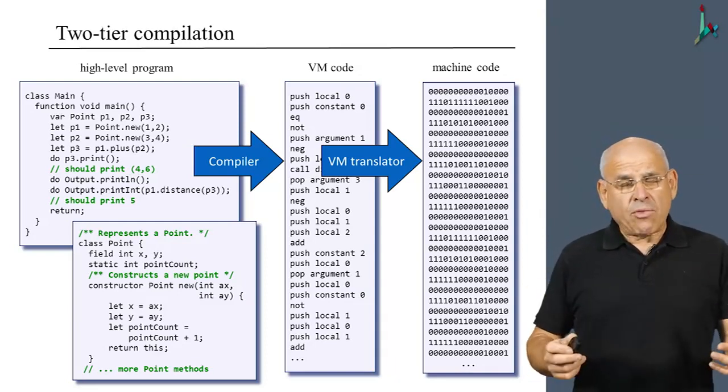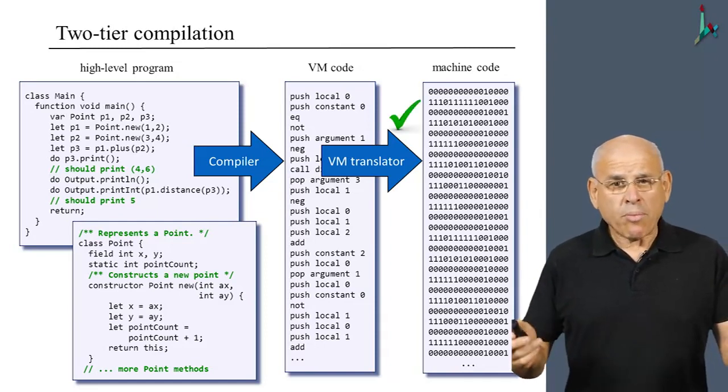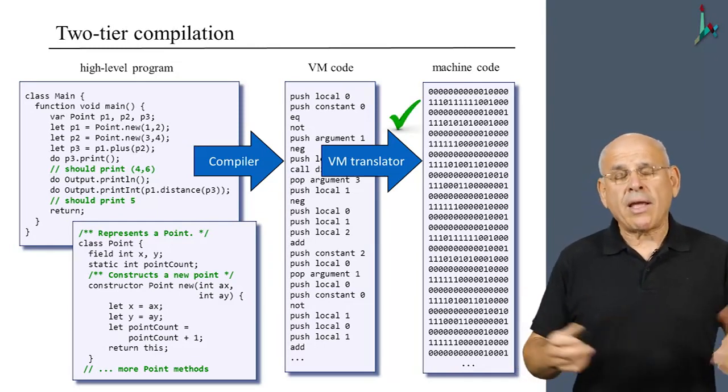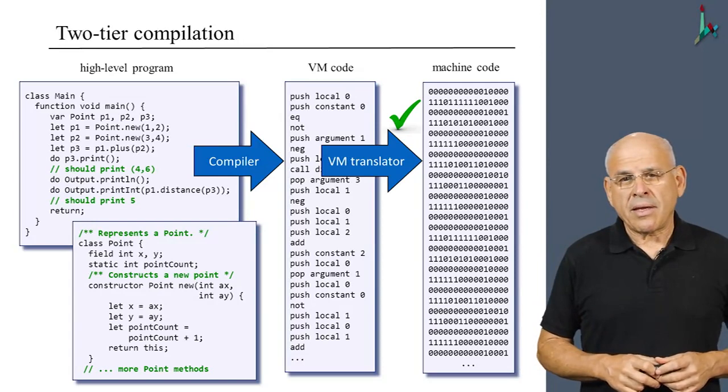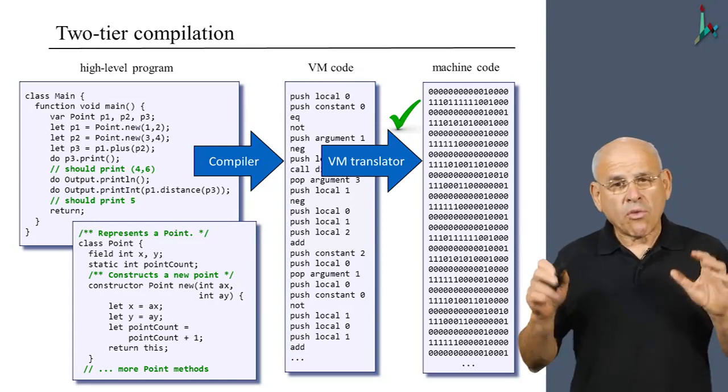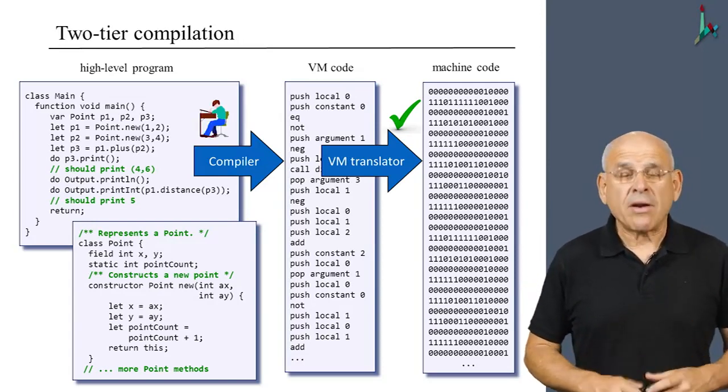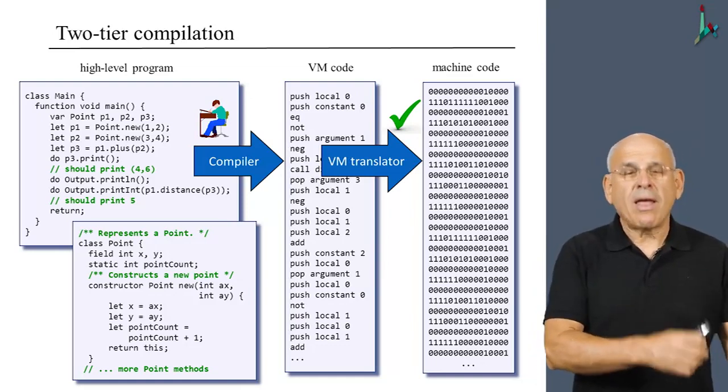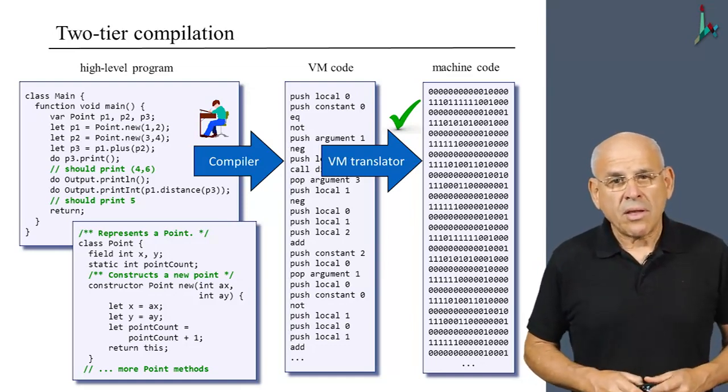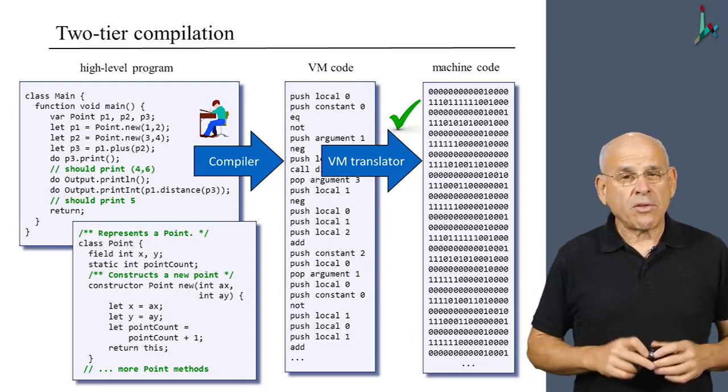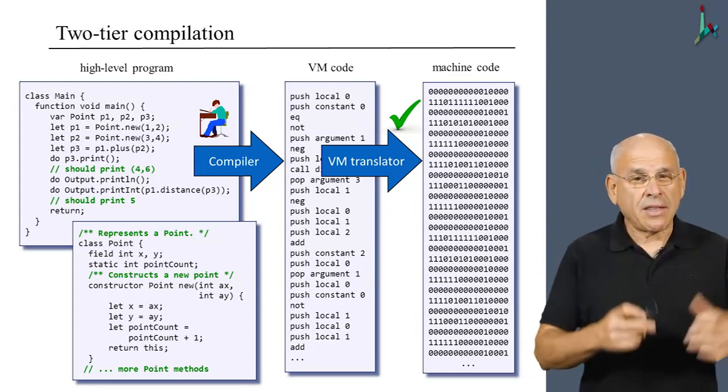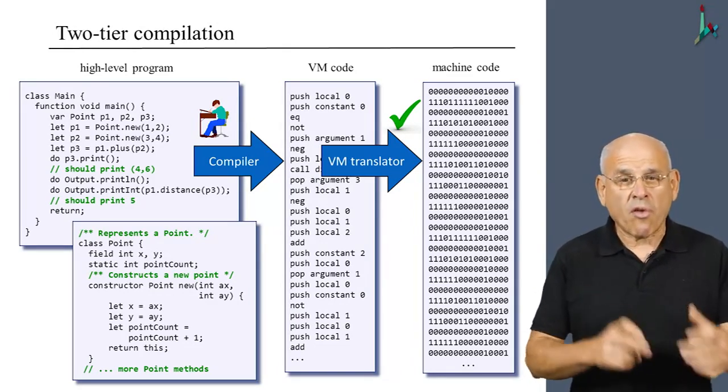The VM translator is a solved problem. It is something that we've already implemented in the previous two modules. So what remains to be done is writing the compiler, writing the program that translates from high level into the VM code. So that's what we're going to do in this and in the next module, in modules four and five.